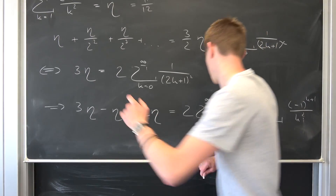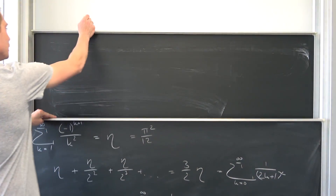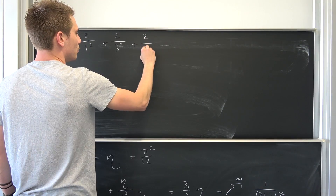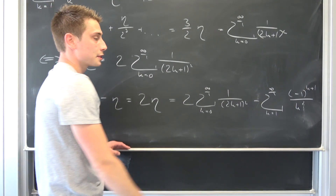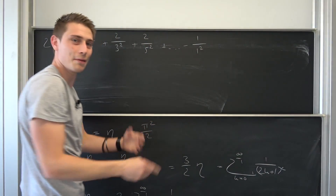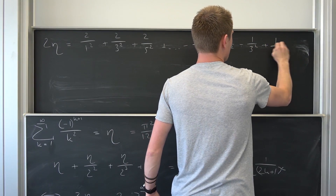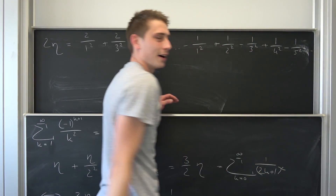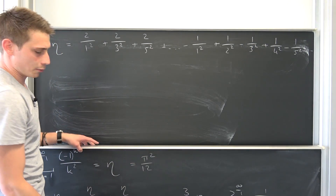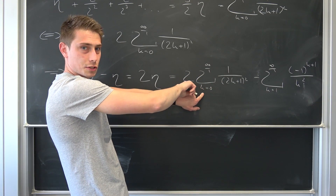Let's write out all those terms and see what we get. So 2 times eta gives: 2 over 1² plus 2 over 3² plus 2 over 5² plus dot dot dot. And our good old Dirichlet eta function with sign switched gives: negative 1 over 1² plus 1 over 2² minus 1 over 3² plus 1 over 4² minus 1 over 5² plus dot dot dot. Now, our sums right here are absolutely convergent — they converge to an actual value — so this thing right here is pi squared over 4, because it's 2 times pi squared over 8. And that other term is negative pi squared over 12.